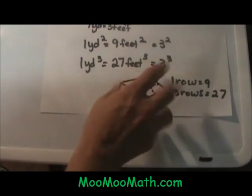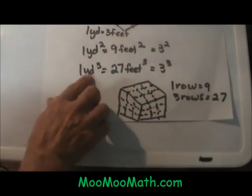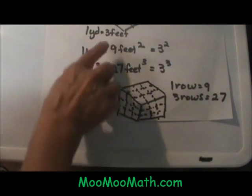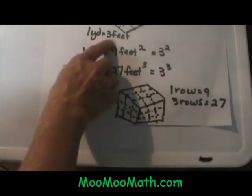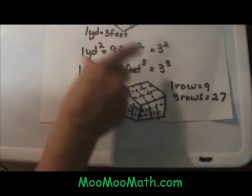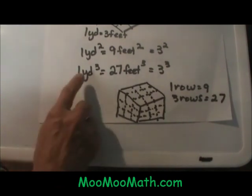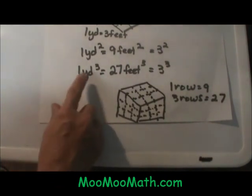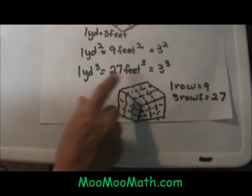What would be the volume of that? Well 1 cubic yard is equal to, remember the linear measurement was a 1 to 3, we are going to cube 3 to 27. So 1 cubic yard is 27 cubic feet.